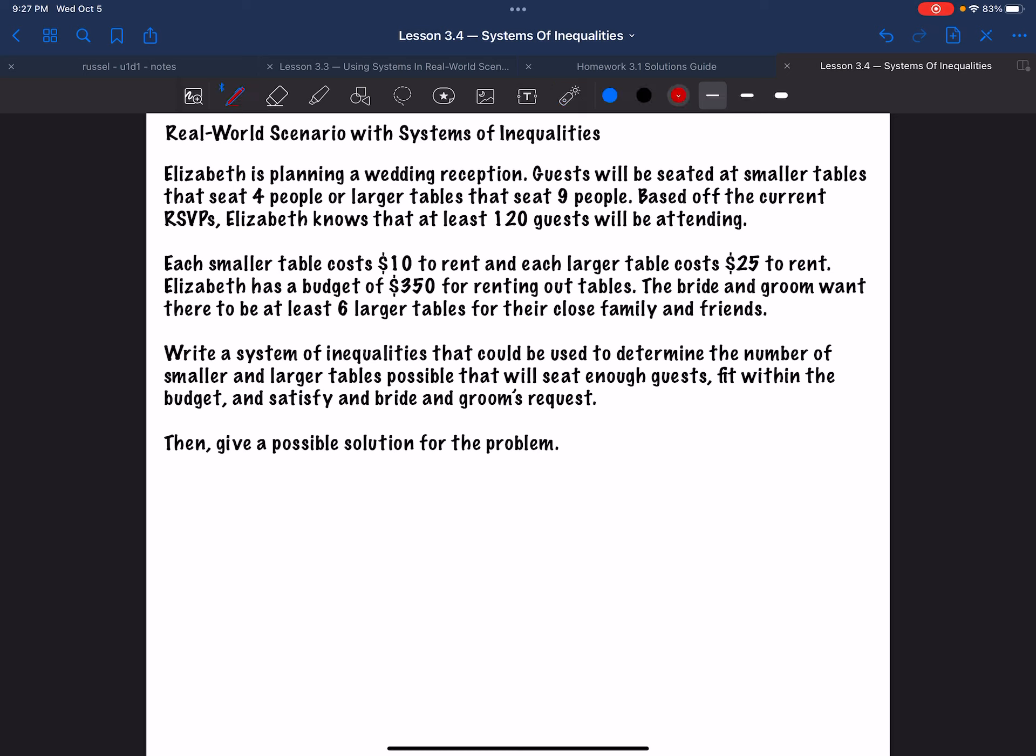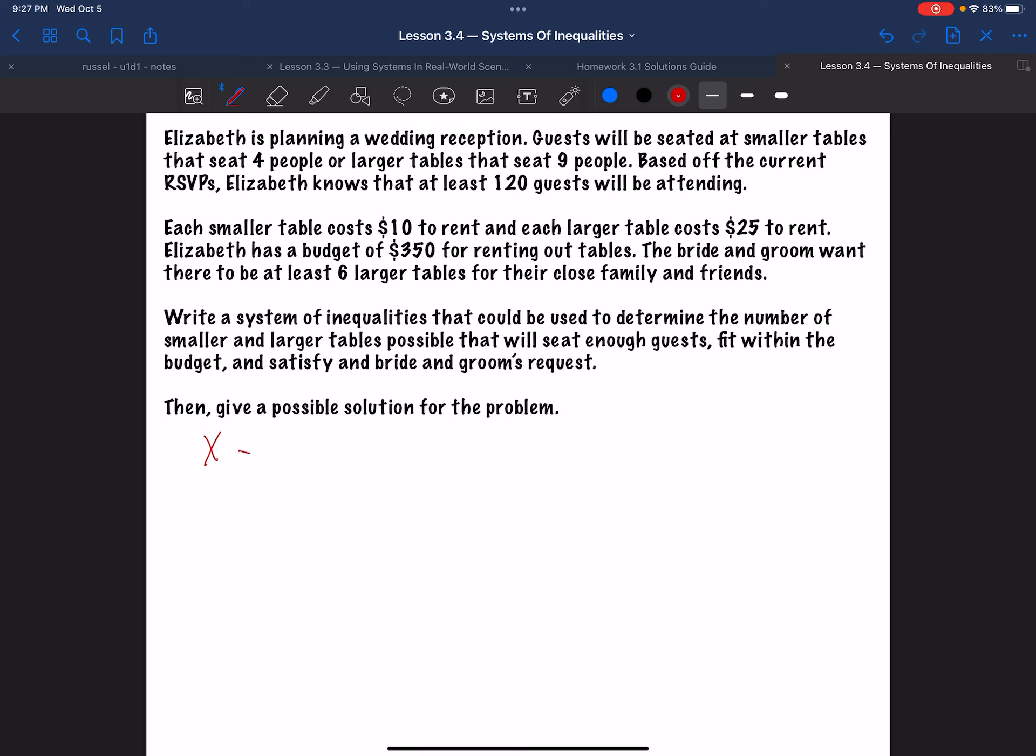So I want at least six larger tables. Now the goal is to write a system of inequalities that could be used to determine the number of smaller and larger tables possible that satisfy all three of these requirements. The three requirements being you want to seat enough guests, so seat at least 120 guests. You need to fit within the budget, so no more than $350. And you want to satisfy the bride and groom's request being that there are at least six larger tables. And then finally, once you've set up this system, give a possible solution for the problem. So there's many different answers you could put for that last part.